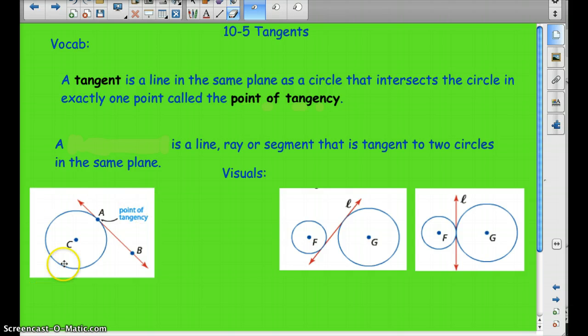And I have a visual right down here, if you want to write that in your packet so you know what that looks like. A common tangent is a line, ray, or segment that is tangent to two circles in the same plane. And here's that visual right here. So here is a tangent. It's tangent to circle F and circle G. And this is one where they're touching right here.